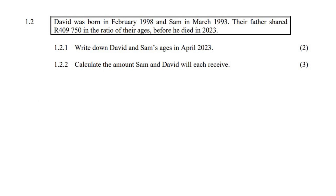David was born in February 1998, and Sam was born in March 1993. Their father shared an amount of money in the ratio of their ages before he died in 2023.